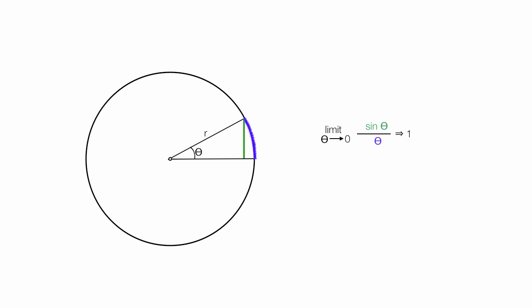These two sides, the opposite side, the green line, and the arc length, the blue line, they're getting to be about the same length. As I let theta even get smaller, closer and closer to zero, notice the opposite side and the arc length now are about the exact same length.